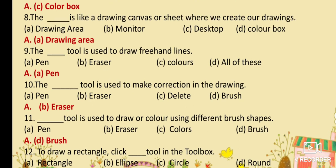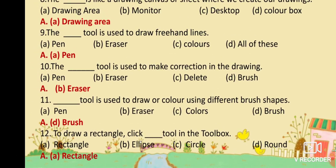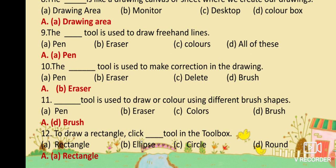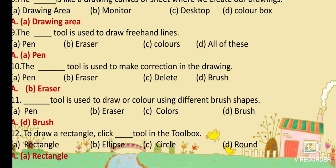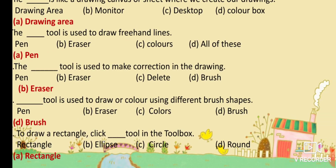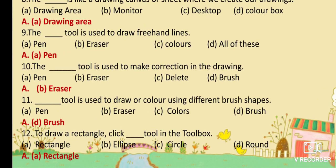MCQ No. 12: To draw a rectangle, click dash tool in the toolbox. Option A: Rectangle. Option B: Ellipse. Option C: Circle. Option D: Round. Your answer is Option A: Rectangle. To draw a rectangle, click the rectangle tool in the toolbox.